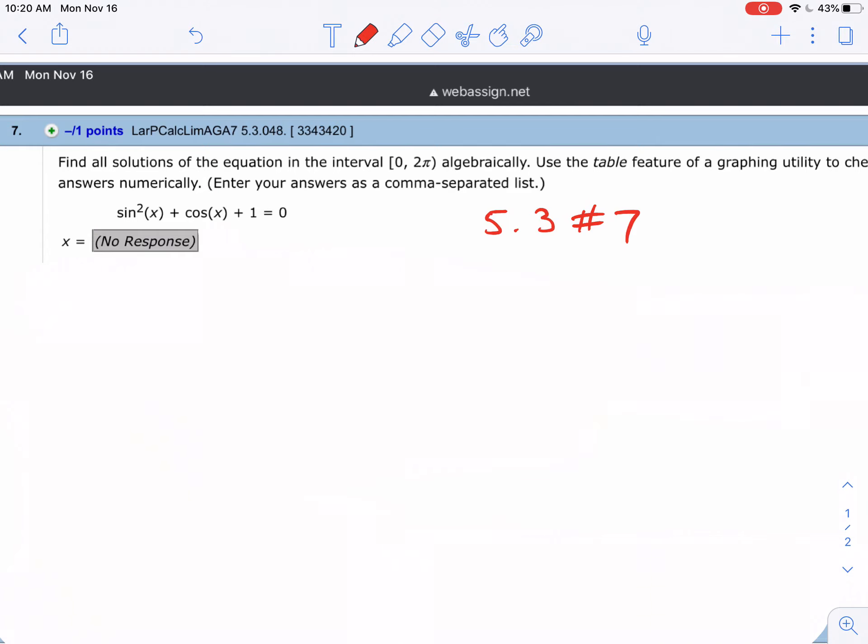5.3 number 7, find all the solutions. They want the answer in radians. One of the problems is I have two different trig functions and there's no way to isolate them, so I'm going to take the sine squared and replace it with 1 minus cosine squared of x. But I didn't do anything to this cosine and I didn't do anything to this one.